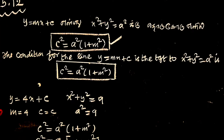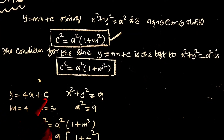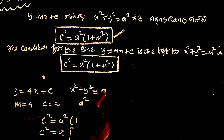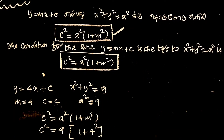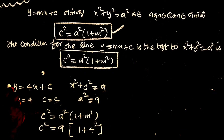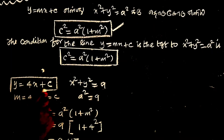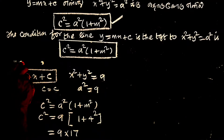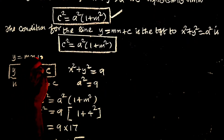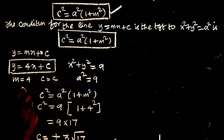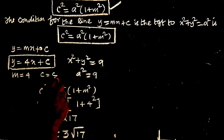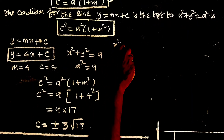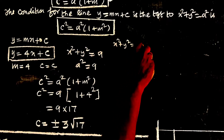Comparing y equal to 4x plus c with y equal to mx plus c, we get m equal to 4. And comparing x squared plus y squared equal to 9 with x squared plus y squared equal to a squared, we get a squared equal to 9.